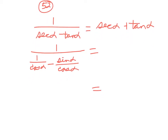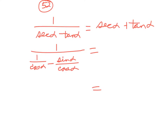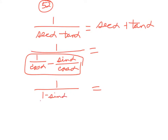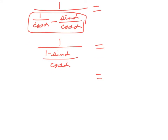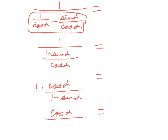We've already got common denominators on the bottom, so we'd have 1 over 1 minus sine alpha over cosine alpha. We're doing 1 times cosine alpha over 1 minus sine alpha, which gives cosine alpha over 1 minus sine alpha.